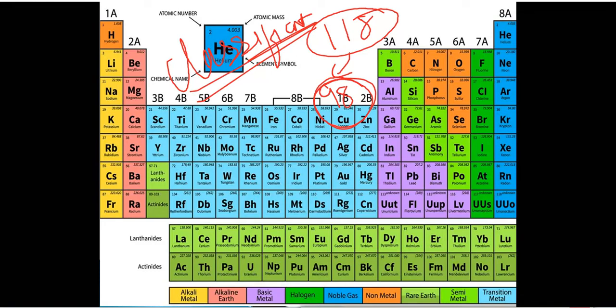What was the need for classification? With 118 elements, it is not possible for scientists to read the properties of each element individually. That's why elements are grouped according to their similarities and dissimilarities. The basis for classification is that elements with similar chemical and physical properties are grouped in one group or period.